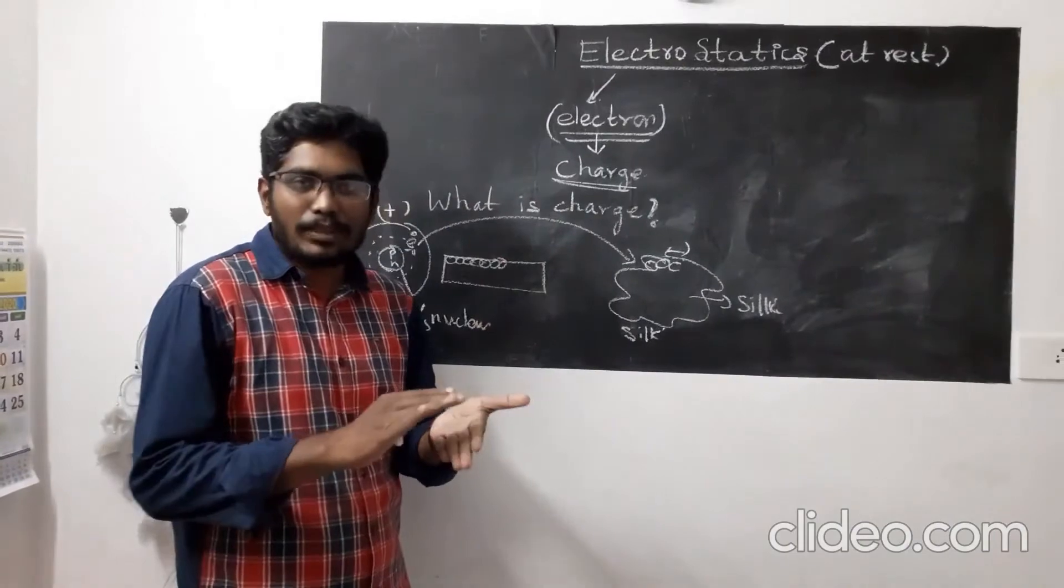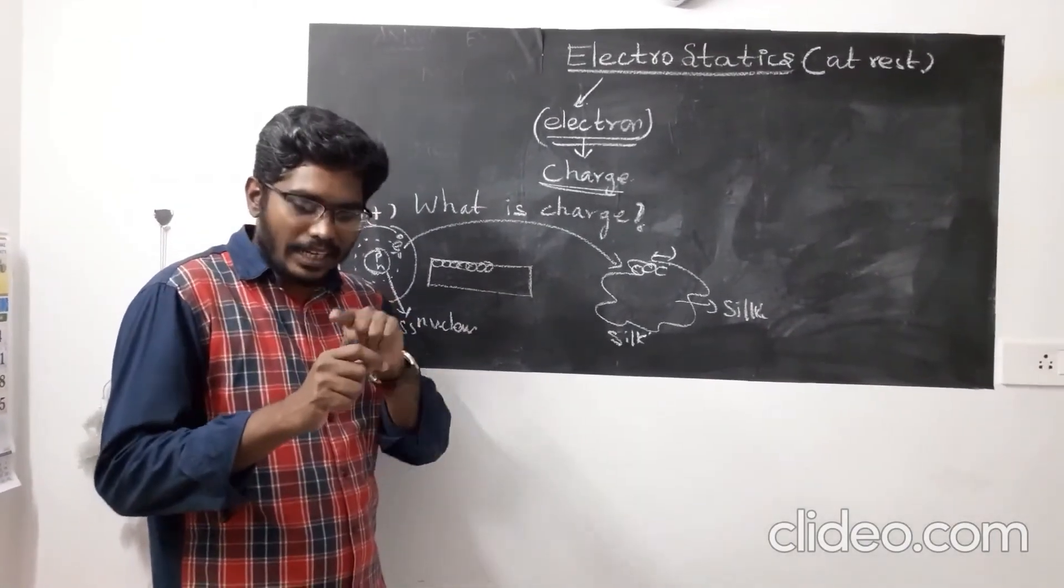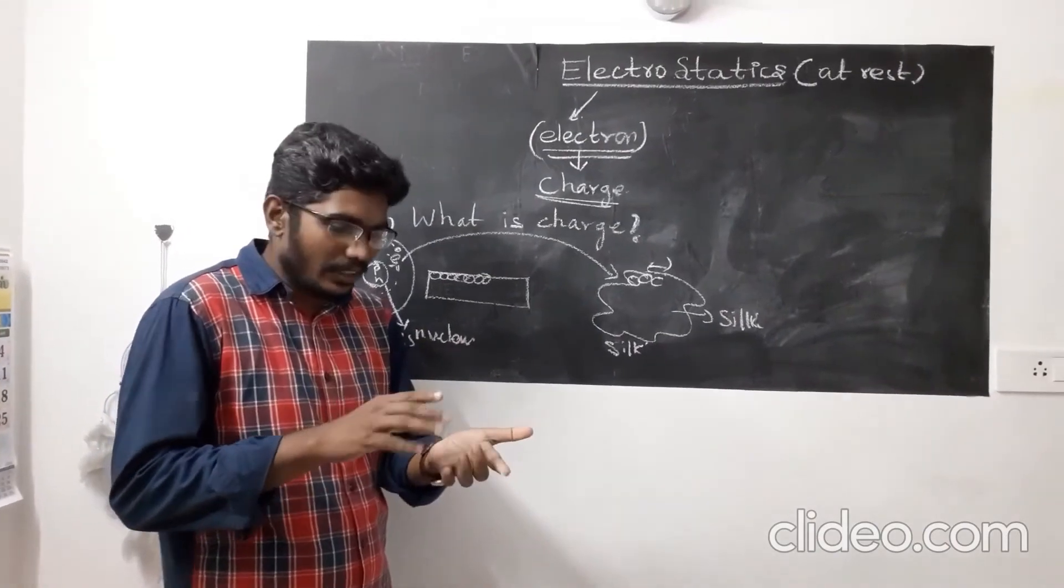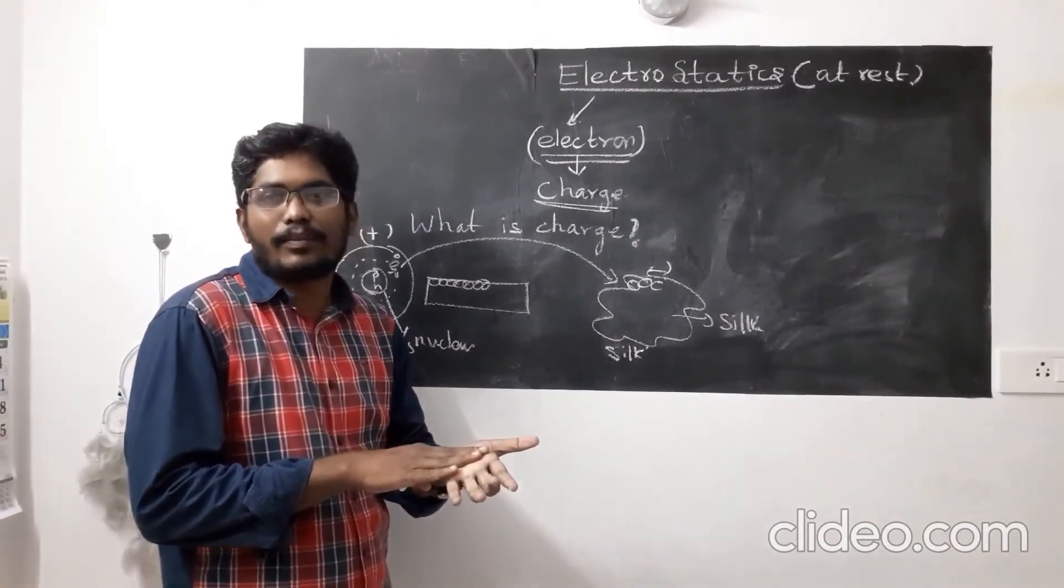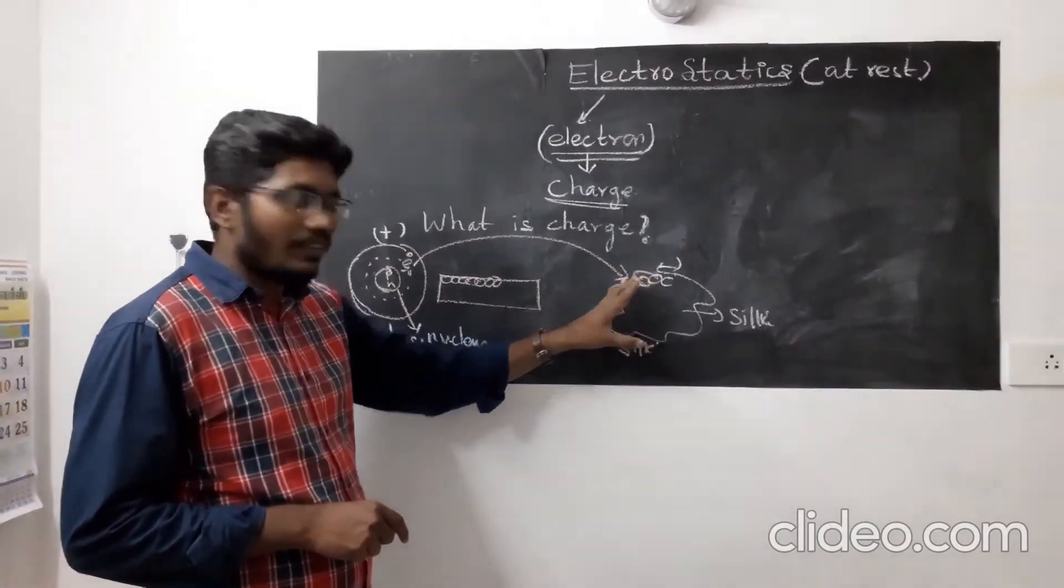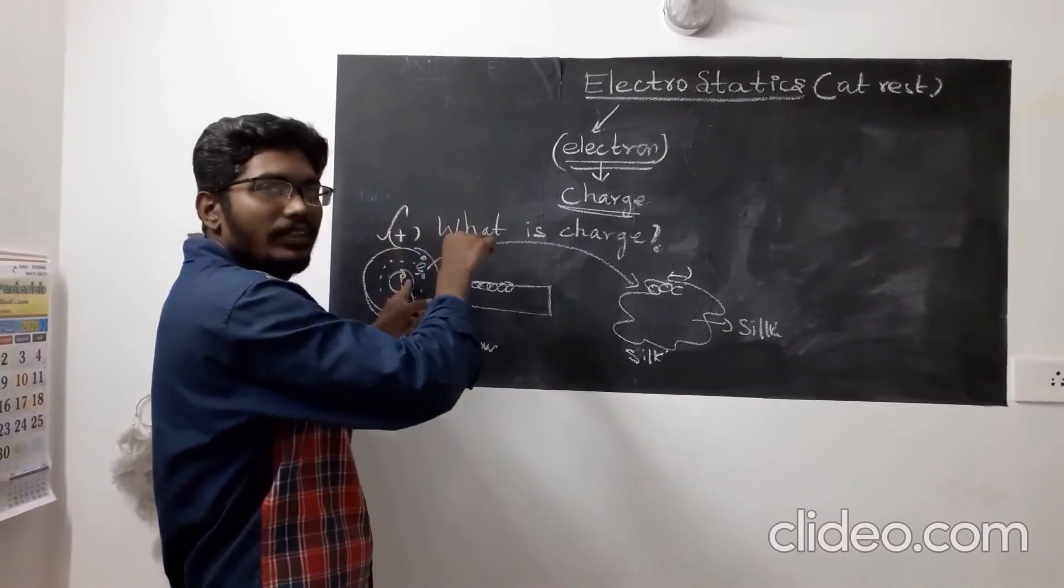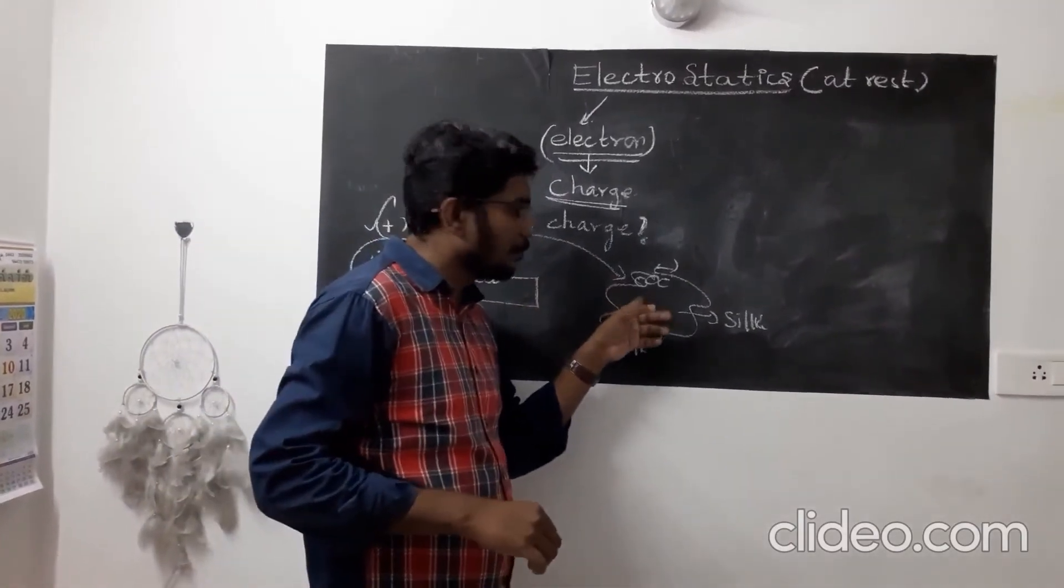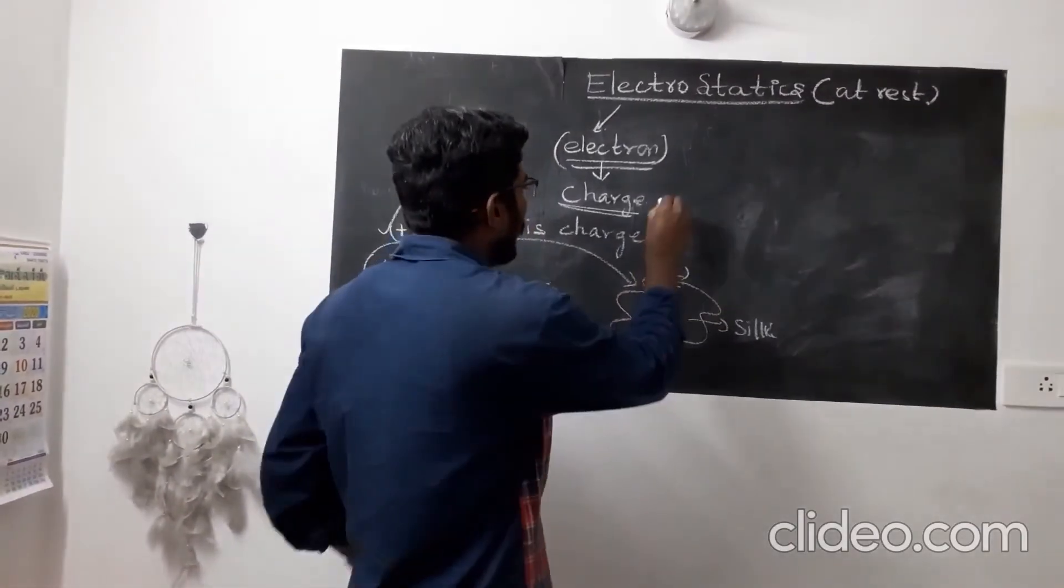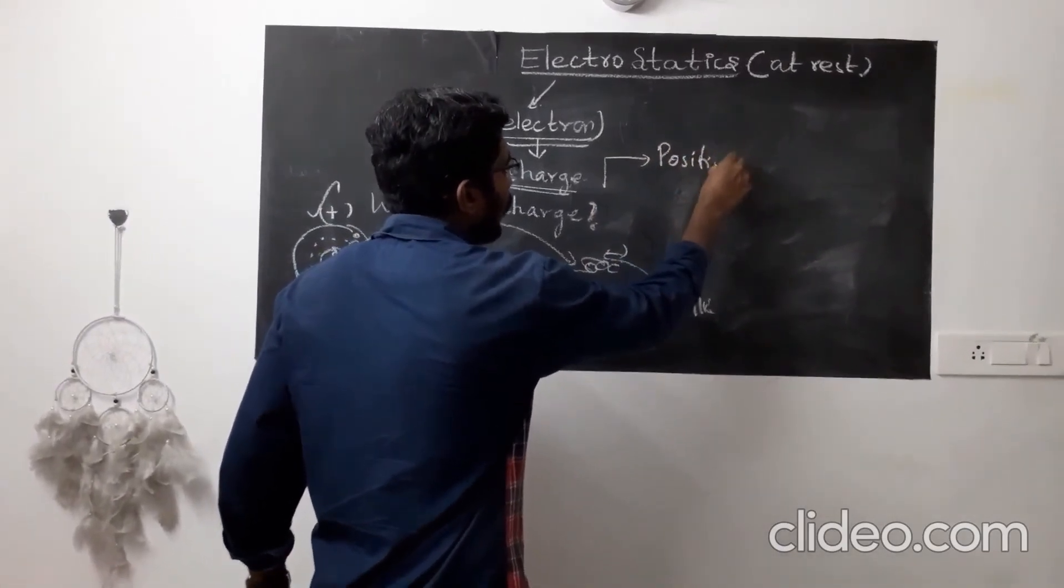Now looking at the same example: when the scale is rubbed, electrons transfer from the glass scale to the silk cloth. If anything loses electrons, it becomes positively charged. If anything accepts electrons, it becomes negatively charged. So we have two kinds of charges: one is positive, and the other is negative.